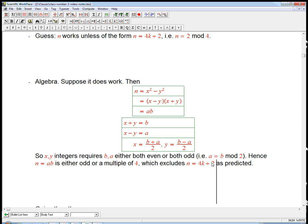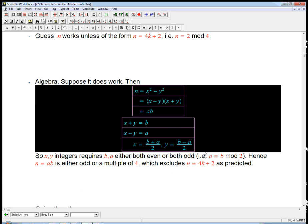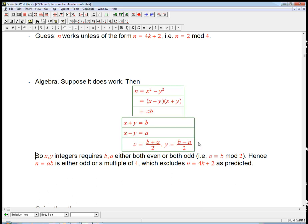So those no's had to show up. But what we haven't shown is the other way. What if it's not 2 mod 4? What if it's not of the form n = 4k + 2? We'd like to reverse this argument, basically.